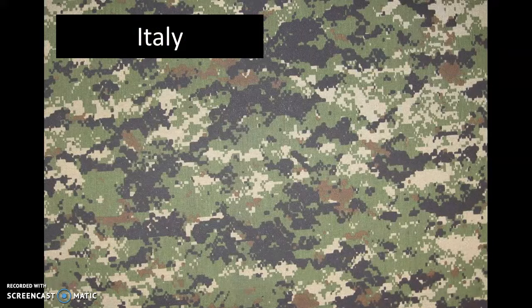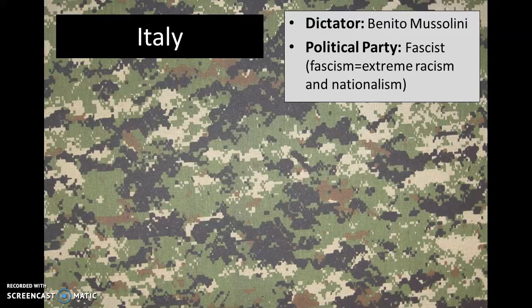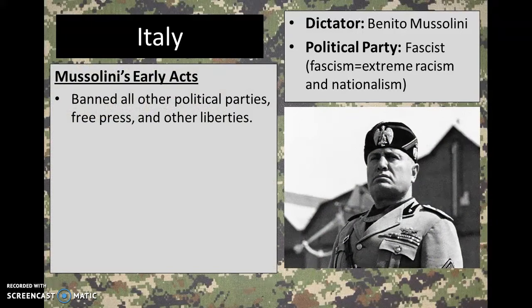We're going to look at a few different countries that had these dictators rise to power, and the first one was Italy. The name of the dictator in Italy was Benito Mussolini, and the political party that he was from was the fascist party. Fascism is an ideology that is extremely racist and extremely nationalist — they were all about Italy and did not trust nor want anything to do with anybody else. When he came to power in Italy, he banned every other political party, not wanting any other voices heard besides his own, and he banned free press and other freedoms so the government could control every bit of Italian citizens' lives.